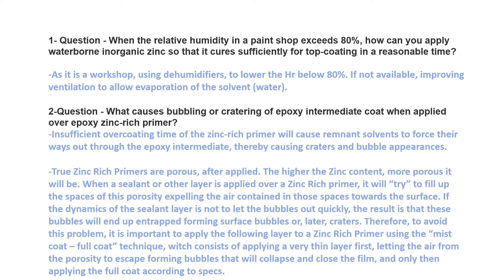You have to give proper time for the curing of the zinc rich primer. The second answer is: zinc rich primers are porous — they are more porous after application, and the higher the zinc content they have, the more porous they will be. When a sealant or other layer is applied over a zinc rich primer, it tries to fill up the spaces of the porosity, expelling the air content in those spaces to pass the surface. If the dynamics of the sealant layer do not let the bubbles out quickly, the result is that these bubbles end up trapped, forming surface bubbles.